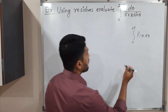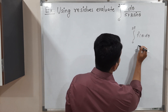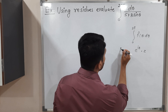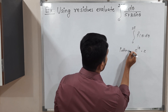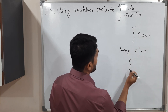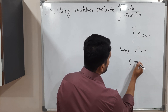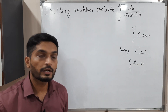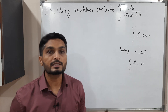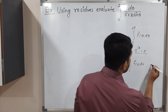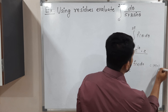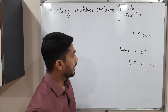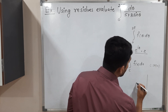First, we substitute e^(iθ) = z. Using this substitution, the real integral is converted into a contour integral over curve C, where C is always |z| = 1, that is, a circle with center at the origin and radius 1.